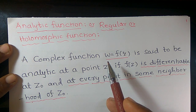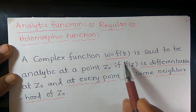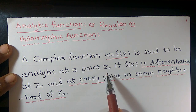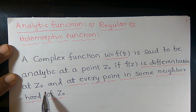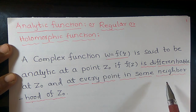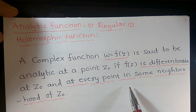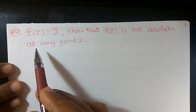Analytic function, or regular or holomorphic function. A function w = f(z) is said to be analytic at a point z₀ if f(z) is differentiable at z₀ and at every point in some neighborhood of z₀. Only in that case can we say that it is analytic.